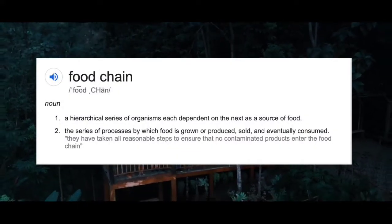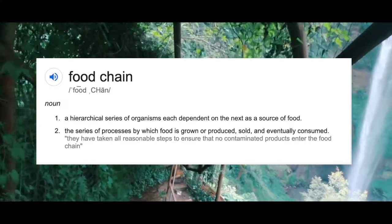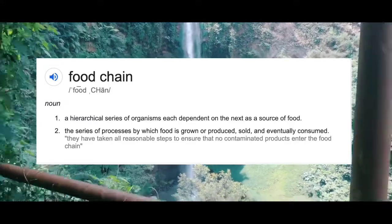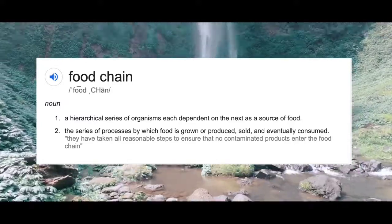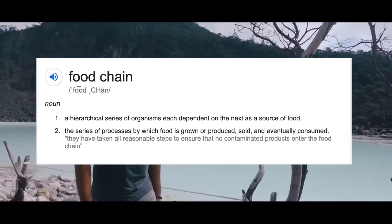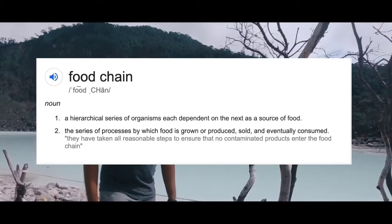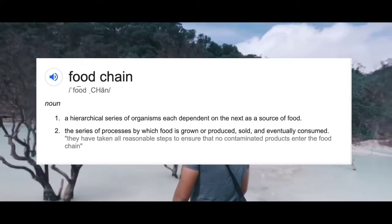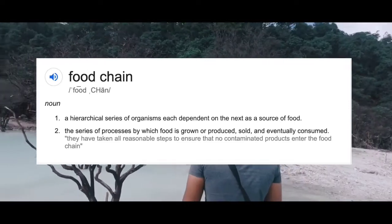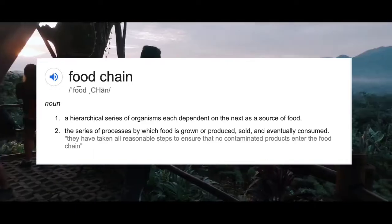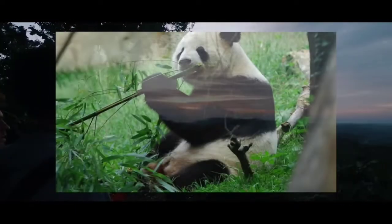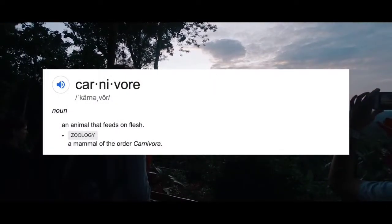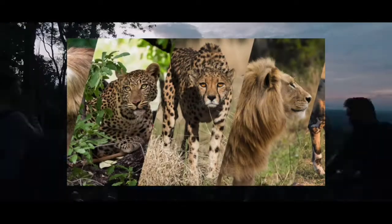Food chains are a big part of the ecosystem — they describe the eating and feeding relationships between living things and their environment. We humans are also part of the food chain. Before stating examples of food chains, there are some terms to learn: herbivores, which are animals that only eat plants; carnivores, which are animals that only eat other animals; and omnivores, which are animals that eat both plants and animals.